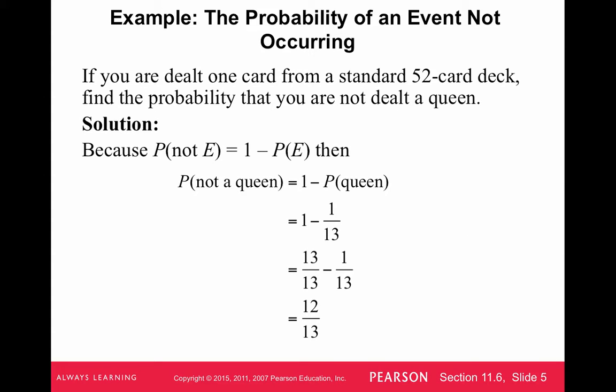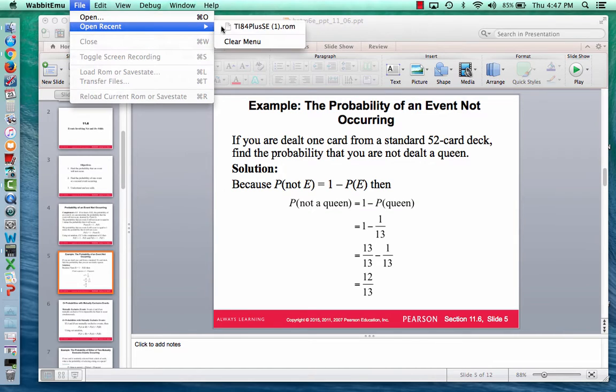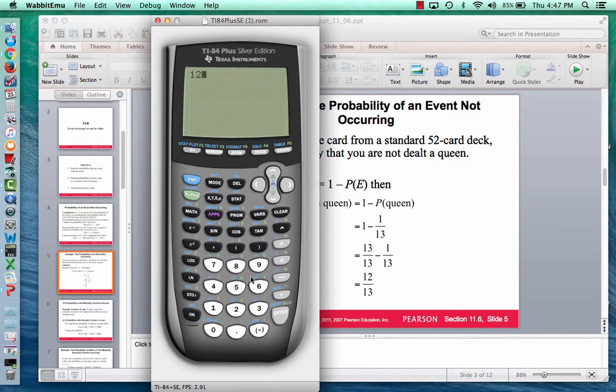So if you're dealt one card from a standard 52-card deck, find the probability that you're not dealt a queen. Well, what's the probability of selecting a queen? There are four queens out of 52, and 4 out of 52 equals 1 out of 13. So the probability of a queen is 4 out of 52, reduced to 1 out of 13. So 1 minus 1 out of 13 is 12 out of 13, which is 92.3%.